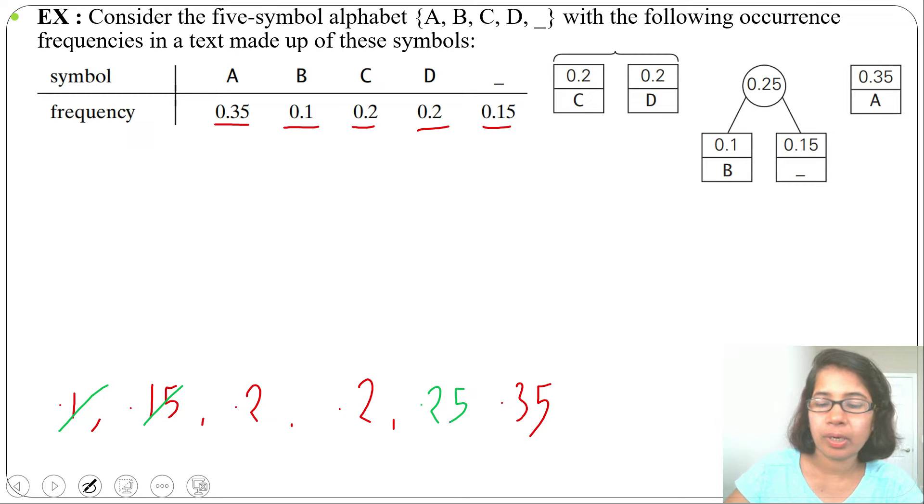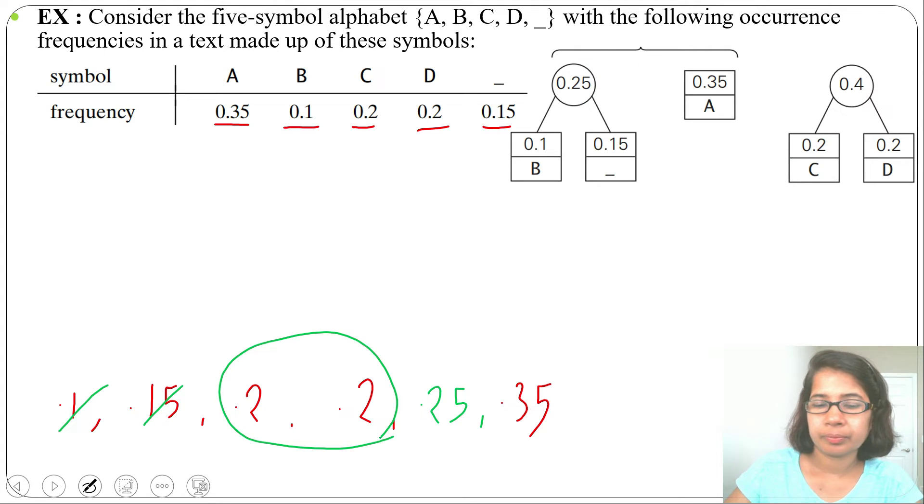Next two are 0.2 and 0.2 for C and D. So next we'll add these two. After addition it will be 0.4 and we'll insert 0.4 in the queue. It will be after 0.35.